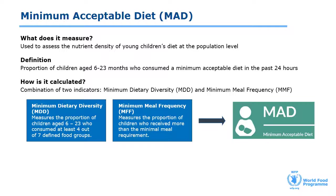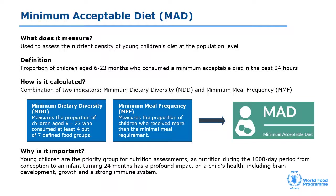For example, the minimum meal frequency is at least 4 feedings for non-breastfed children aged 6 to 23 months, and at least 2 feedings for breastfed children aged 6 to 8 months. The MADD survey is conducted with the primary caretaker of the child, which is often the mother, but not always. Young children are the priority group for nutrition assessments, as nutrition during the thousand-day period from conception to an infant turning 24 months has a profound impact on a child's health, including brain development, growth, and a strong immune system. Infant and young child feeding practices directly affect the nutritional status of children under 2 years of age.